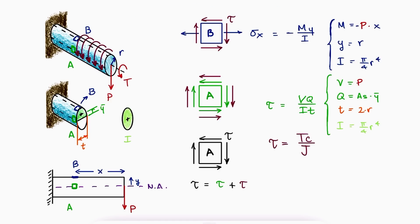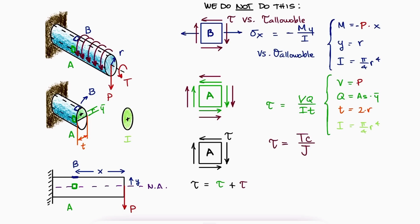We wouldn't compare them individually to a maximum allowable normal stress and a maximum allowable shearing stress respectively. What we know about a material in the real world is its material properties, such as the yield strength or the ultimate strength. For this reason, it's important to find the maximum values of the shear stress and the normal stress at location b, for when the stress element is rotated, and the angle of rotation for which that stress element yields the maximum values of stress.